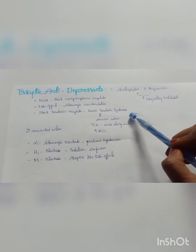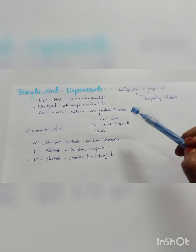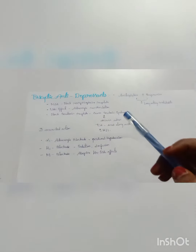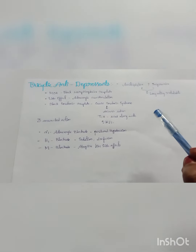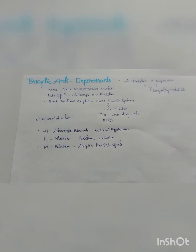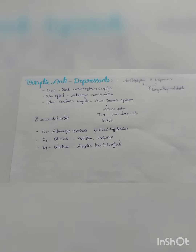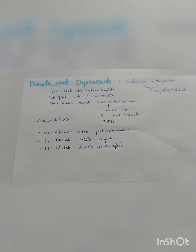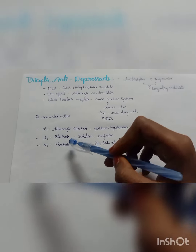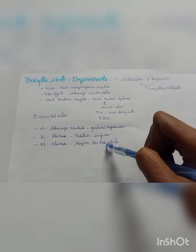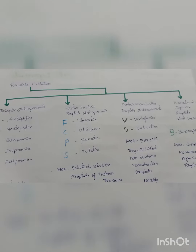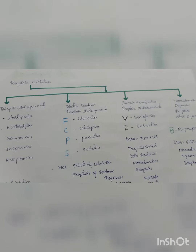Serotonin syndrome occurs when tricyclic antidepressants are used along with selective serotonin reuptake inhibitors. The three unwanted actions of tricyclic antidepressants are: alpha-1 adrenergic blockade which causes postural hypotension, H1 blockade which causes sedation and confusion, and muscarinic blockade which causes atropine-like side effects.